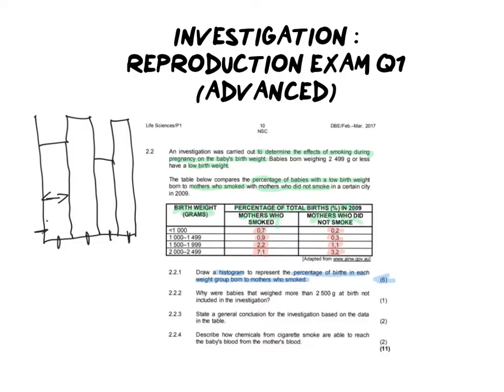Don't leave the blue lines on your page to do the y-axis for you — you must draw it in with your pen. You are going to draw the histogram using only the percentage of births in each weight group born to mothers who smoked, which means you're only drawing one set of bars, not two sets of bars — one for each group of mothers. That's an important fine detail and a lot of people miss it.